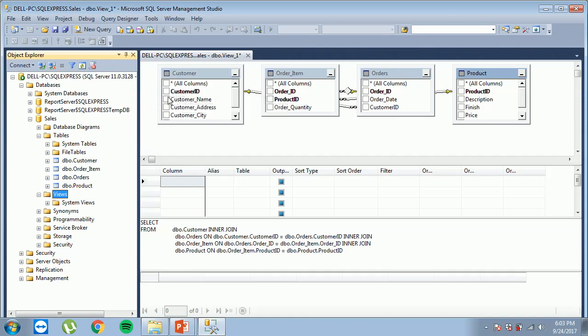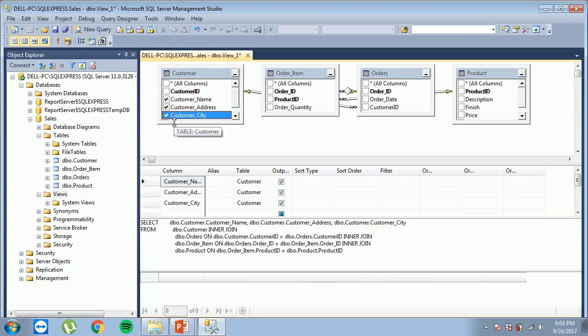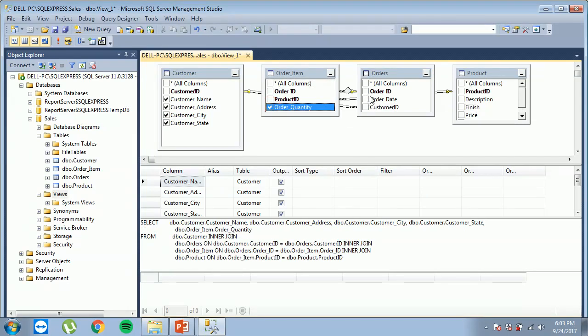We choose the customer name, the customer address, customer city, customer state, the ordered quantity, the order date, the description of the product, the finish of the product, the price of the product, and lastly, the date of its release.